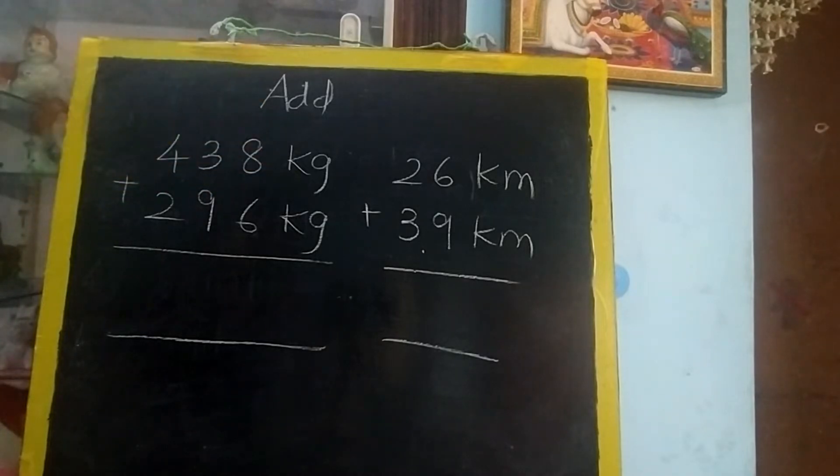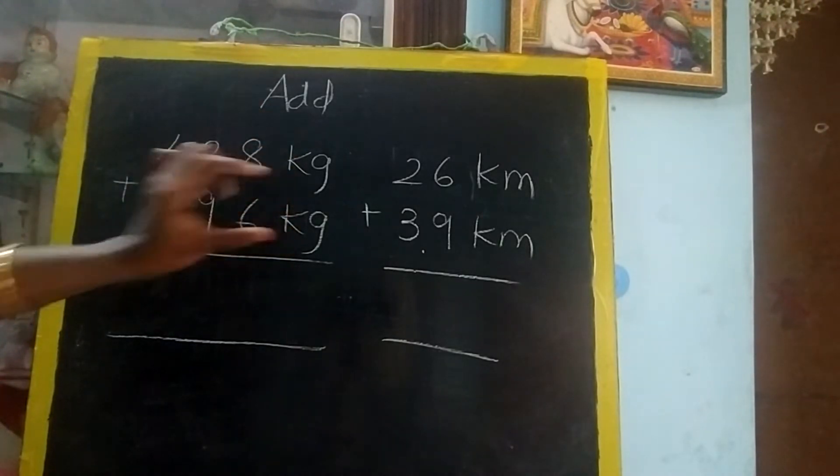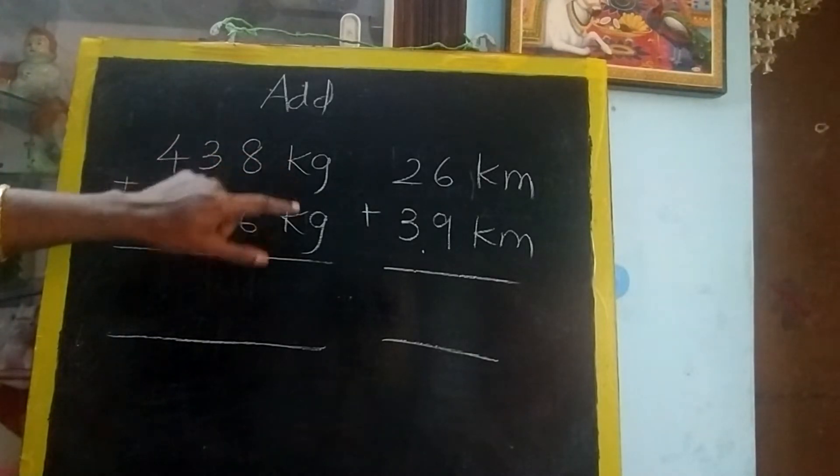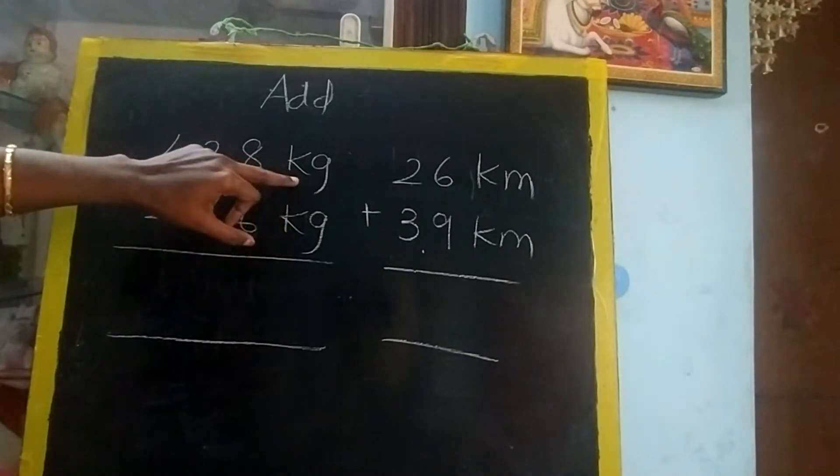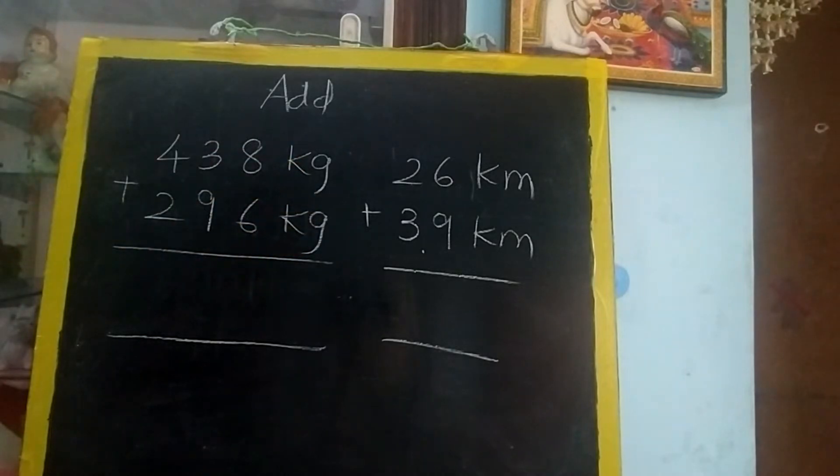The thing is addition is the same, you're all very strong in addition I know. But the thing is you have to write the units also. And we can add always the same units with same units only. Suppose kg and km we cannot add because kg is weight and km is length.